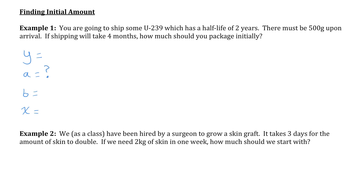We don't know the initial amount — that's what we're solving for. We do know the future amount is 500. This is a half-life question, so the amount of uranium is repeatedly being cut in half, so the base of our power is one-half, and x is the number of half-life periods. We calculate that by doing the total time — four months — divided by the time of one half-life period, which is two years, or 24 months. So x equals four over 24, which reduces to 1 over 6, and that's the exponent.